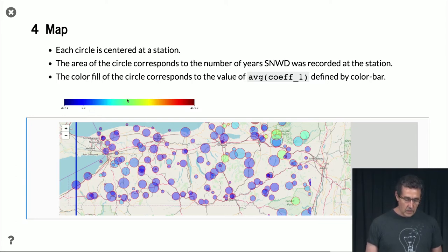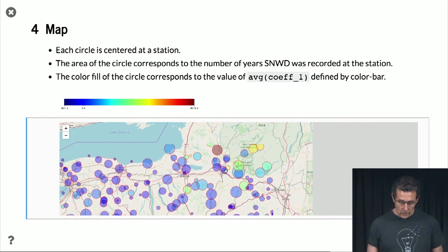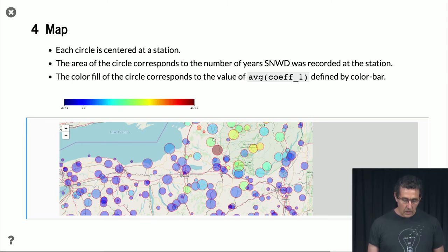But then there are some stations that have higher snowfall. If we look here, we see that, for instance, this station right here has pretty high snowfall.